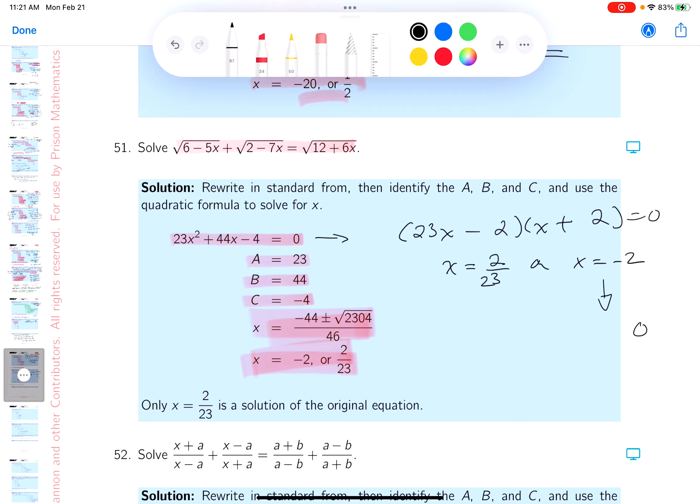You get √16 plus the root... what do you get there? You get 16. Well, unfortunately, √16 is 4, and 4 plus 4 is